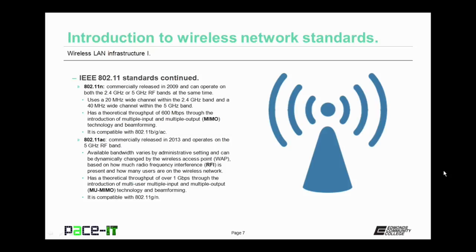802.11n was commercially released in 2009 and can operate on both the 2.4 gigahertz and 5 gigahertz radio frequency bands at the same time. It uses a 20 megahertz wide channel within the 2.4 gigahertz band and a 40 megahertz wide channel within the 5 gigahertz band. It has a theoretical throughput of 600 megabits per second through the introduction of multiple input and multiple output MIMO technology and beamforming. It is compatible with 802.11b, 802.11g, and 802.11ac.